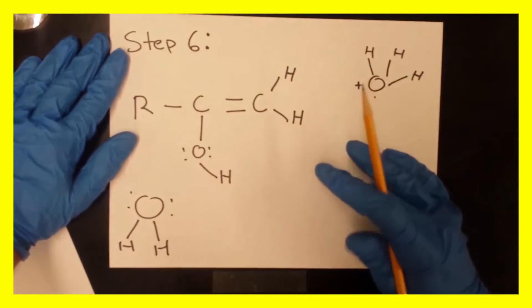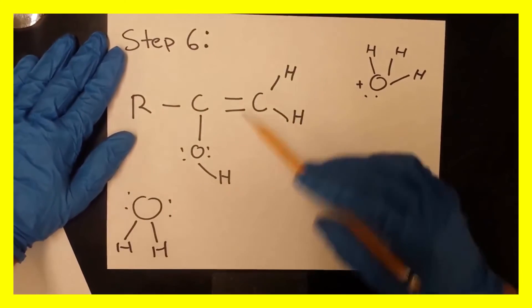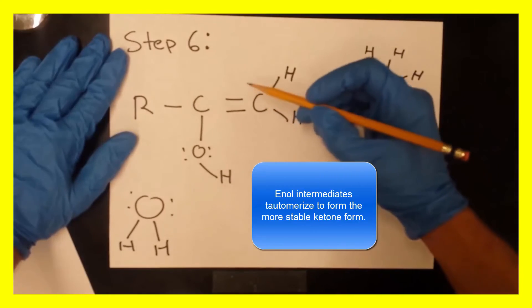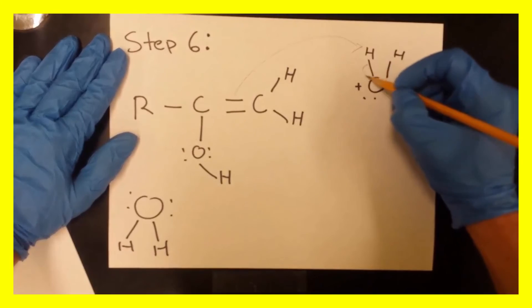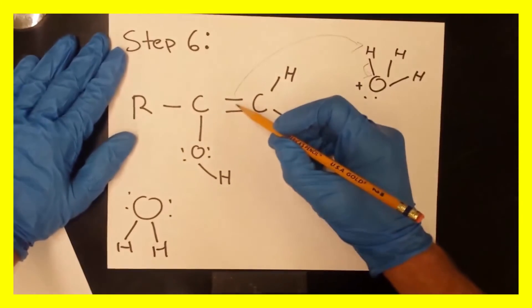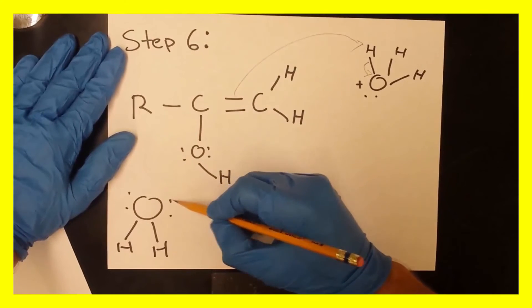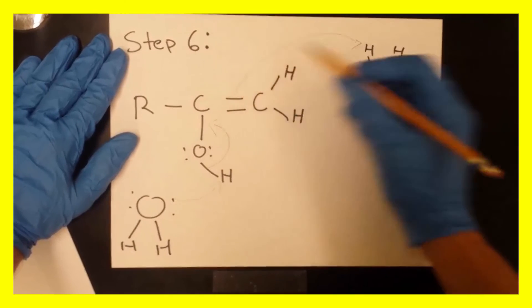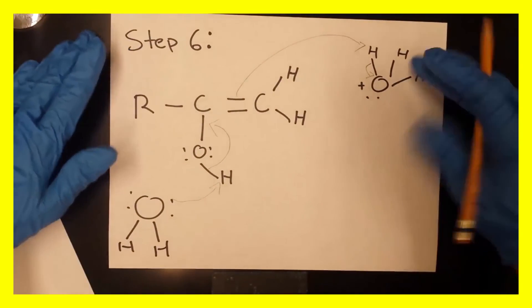So what's going to happen here now is this enol intermediate is going to go through tautomerization to form a ketone. So this double bond is going to attack this hydrogen breaking off here. This double bond is going to, first this electron is going to attack this hydrogen forming the double bond here in order for that double bond to attack this hydrogen and for it to make a water molecule here.